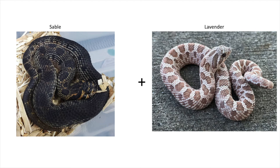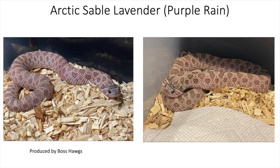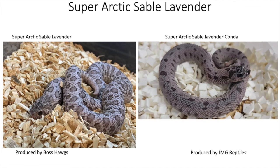Next up we're combining sable with the lavender gene. I believe this was first produced last year and was termed the purple people eater. We have the sable lavender, the sable lavender conda, and the sable lavender super conda. Taking it a step further by adding the arctic gene gives you the purple rain, produced by Boss Hogs. The super arctic sable lavender was also produced by Boss Hogs, and this year the super arctic sable lavender conda was produced by Jeff Gailwood. This is one of my favorite morph combinations involving the super arctic — adding that sable gene makes for a very unique-looking snake.